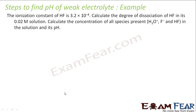Let's take one example. The Ka for HF is 3.2×10⁻⁴, and we need to find the degree of dissociation for HF in its 0.02 M solution. We also have to calculate the concentration of all species and find the pH.